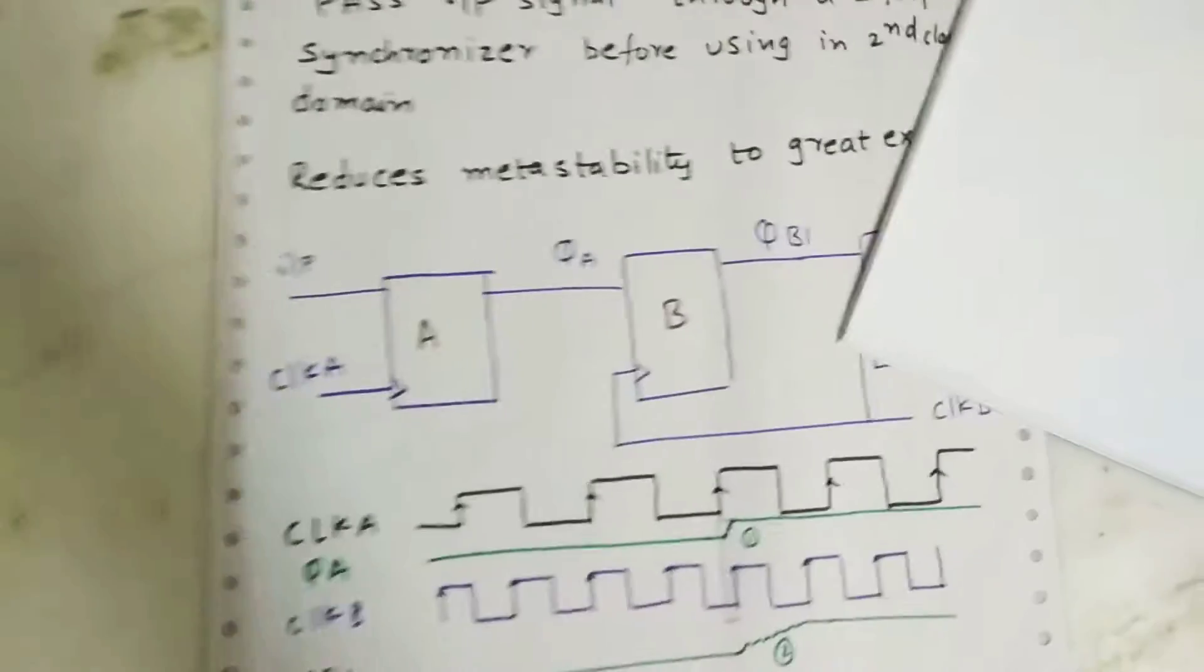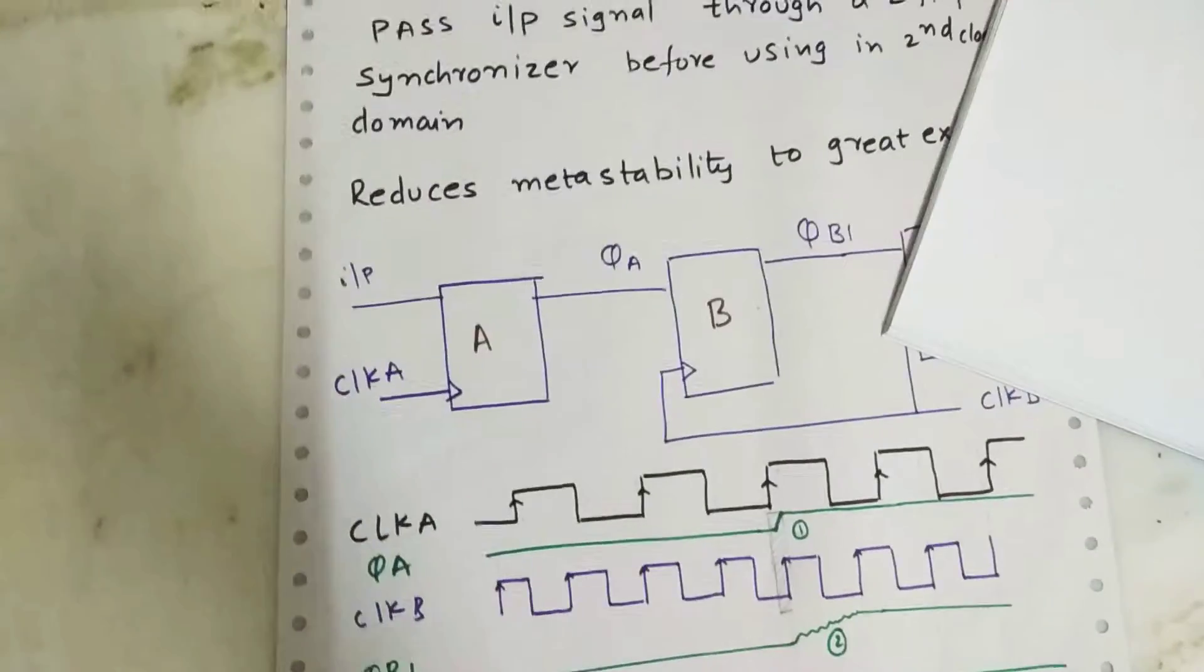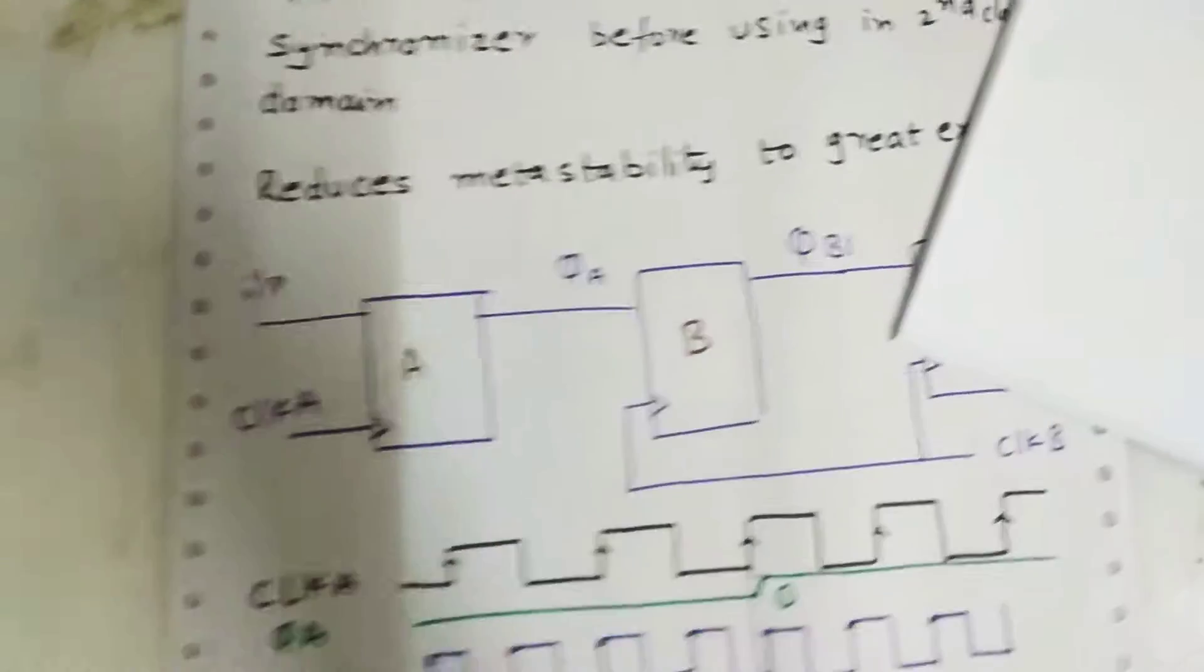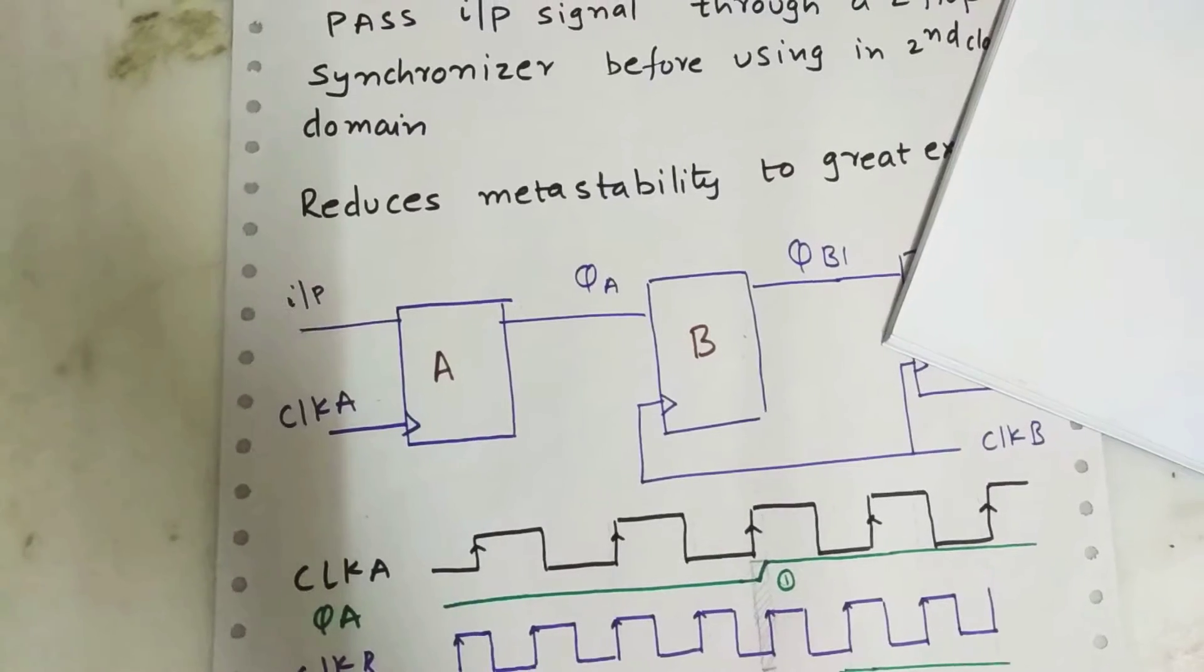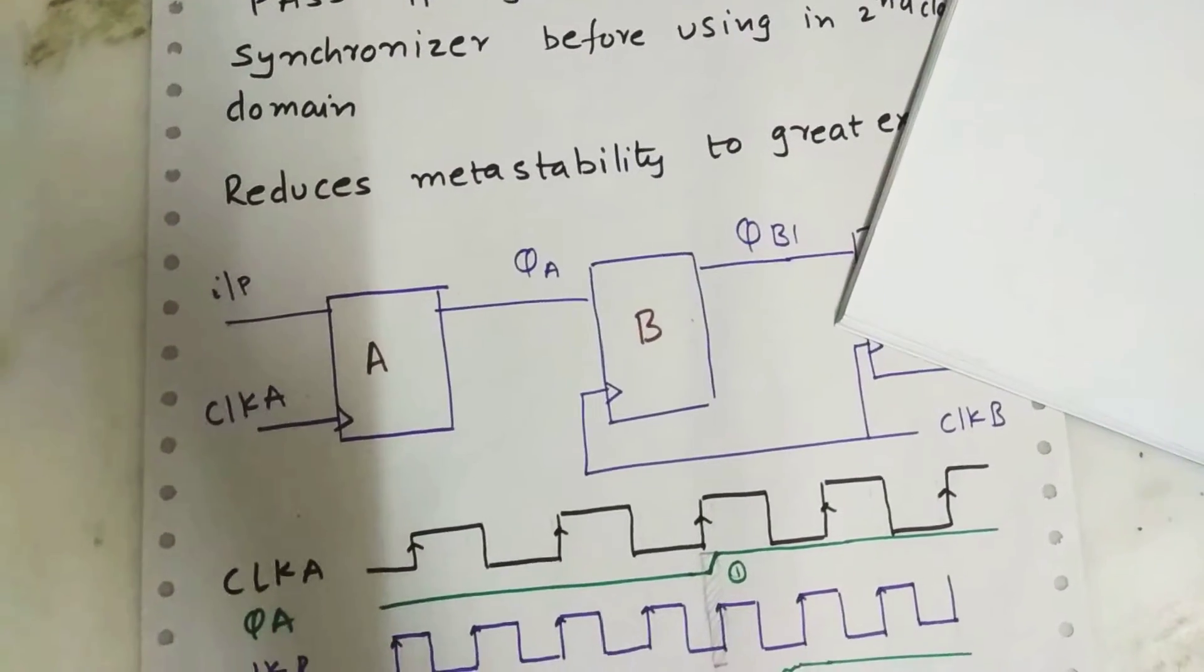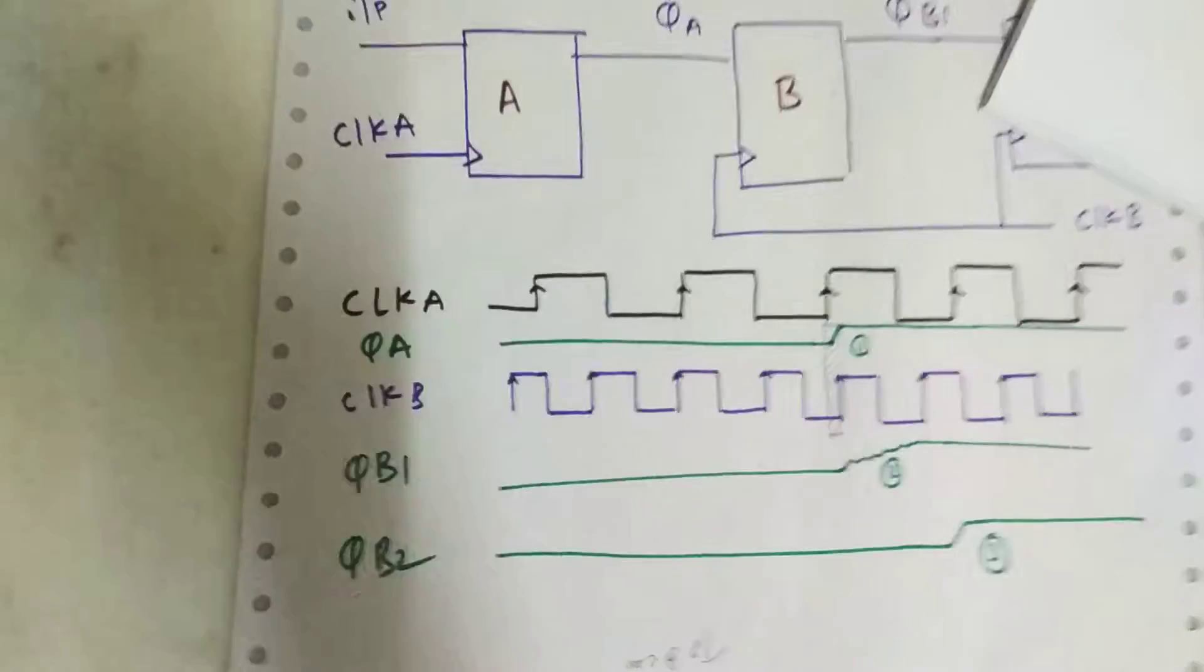So where there is a two clock domain, let us consider an example: device A and device B. Here A and B are the flops which are running on different clock domains, clock A and clock B. The input is passed through A and the output of A is passed through clock B.